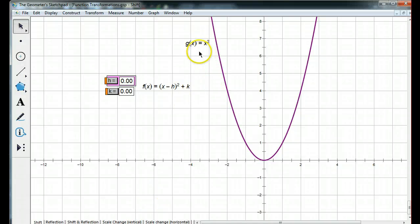You'll notice that I have g of x equals x squared, and that's my basic parabola, vertex at 0, 0, and I'm subtracting h from x. So, let's see what happens when we let h change. Notice that when h is 5, my function is x minus 5 squared, and it moves to the right 5 units. So, when I'm subtracting a number from x, it's going to move to the right.